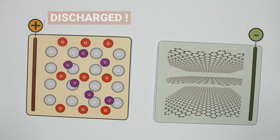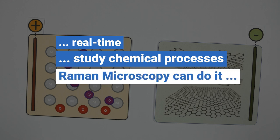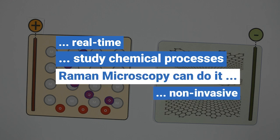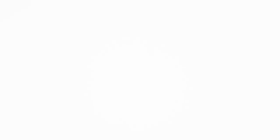Now, wouldn't it be great if we could watch what's happening in real time and learn about the chemical processes? Fortunately, Raman can do it, even non-invasively and non-destructively, just by looking at the graphite electrode. On the molecular level, graphite displays a sheet-like carbon structure.